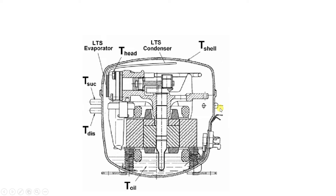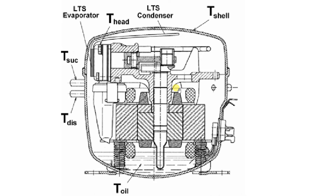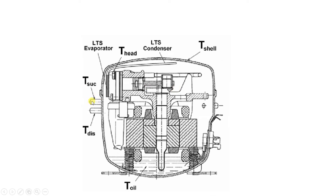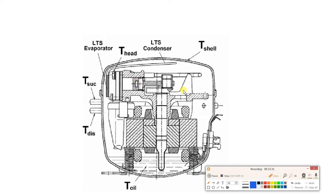In the hermetically sealed compressor diagram, you can see the connecting rod, crankshaft, and piston which reciprocates inside the cylinder. This is a reciprocating compressor with a horizontal reciprocating direction. Springs are used to absorb the vibration. All components are inside the outer shell, which is welded.